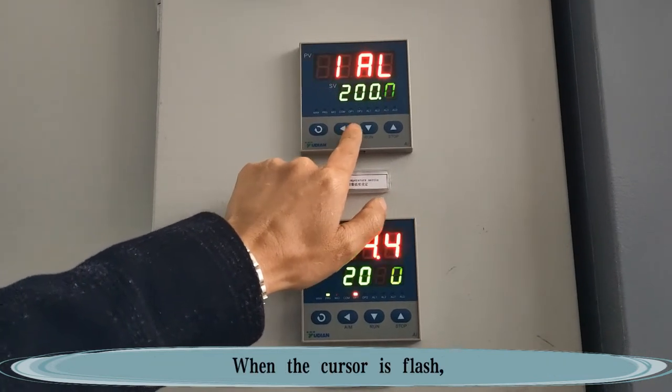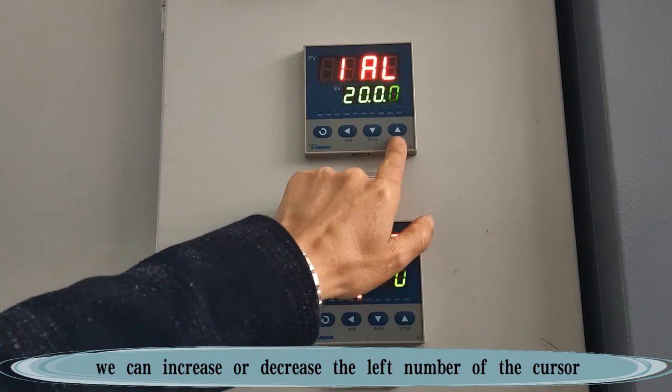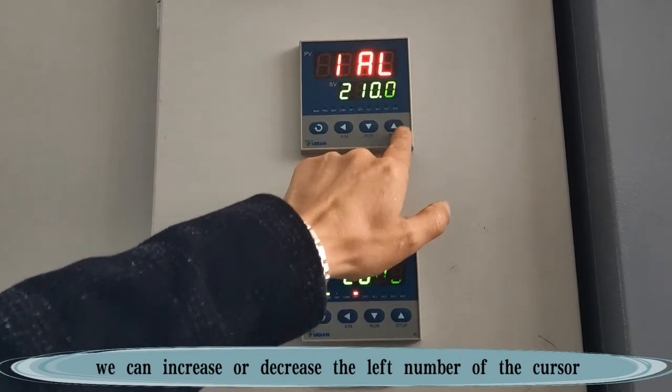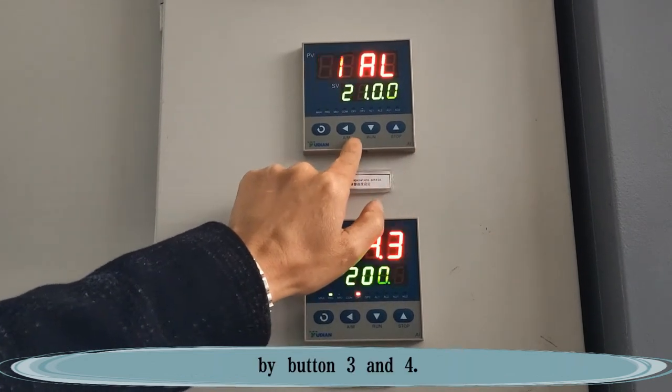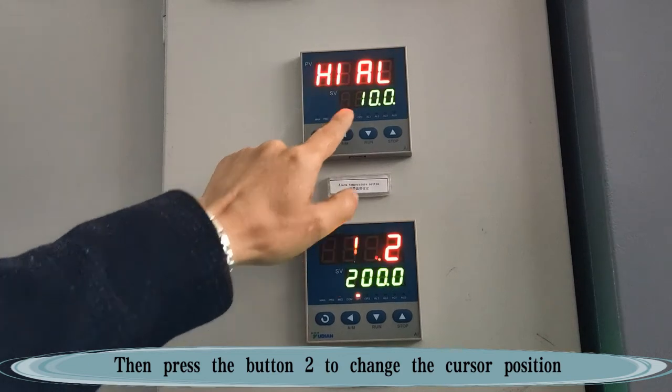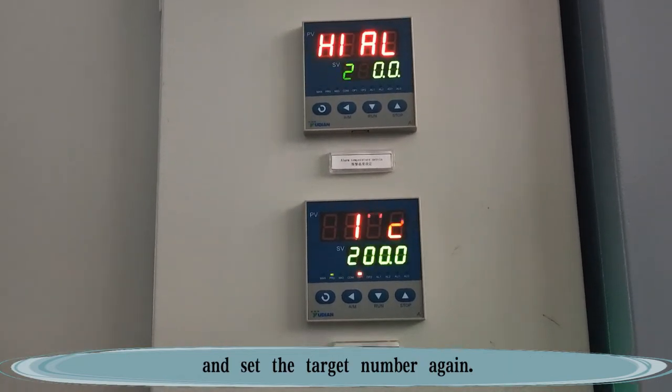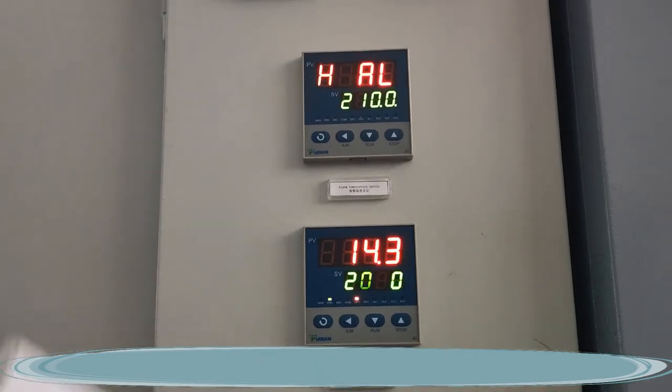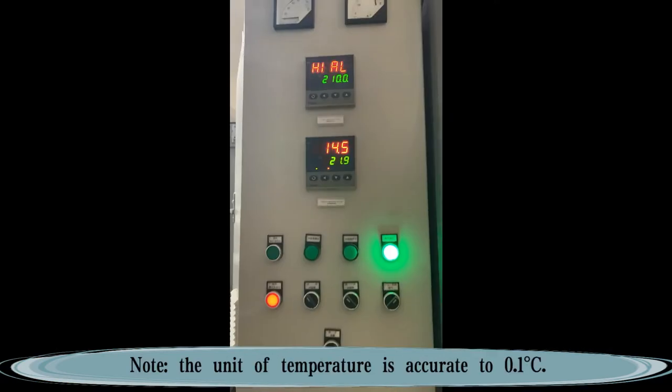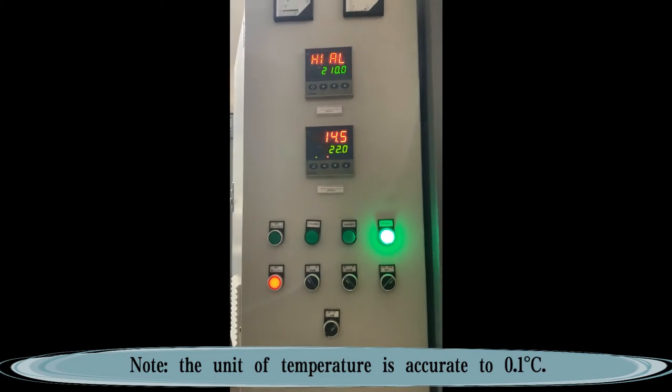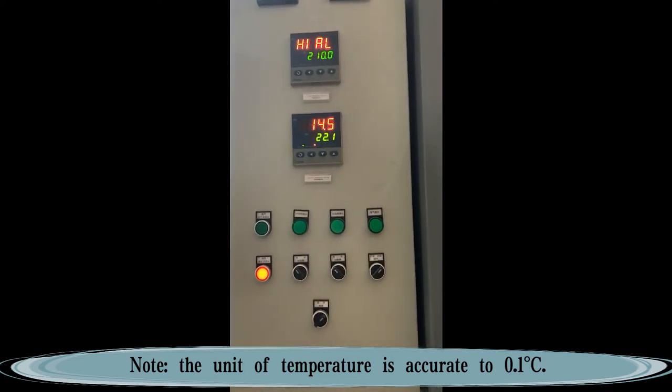When the cursor is flashing, we can increase or decrease the left number of the cursor by buttons 3 and 4. Then press button 2 to change the cursor position and set the target number again. Please be attentive. The unit of temperature is accurate to 0.1 degrees Celsius.